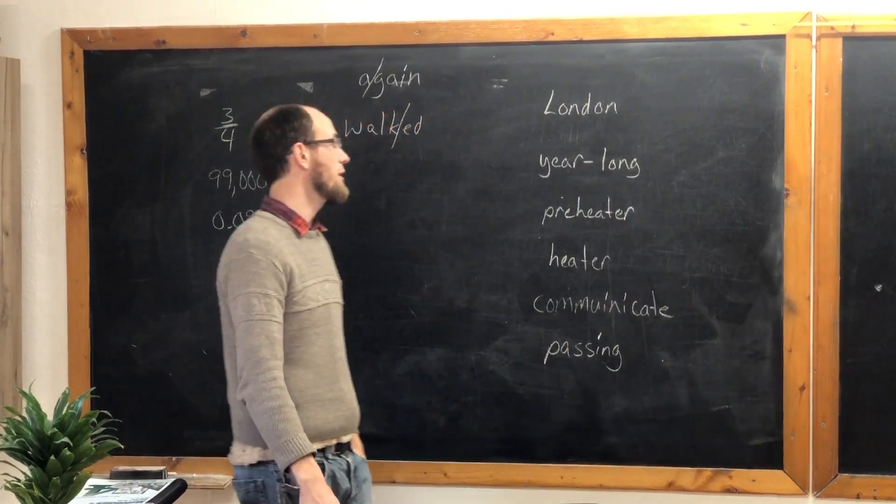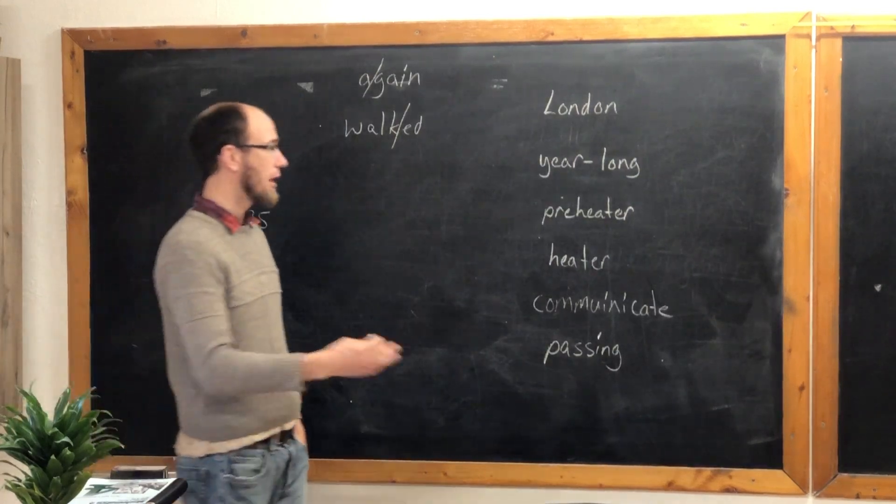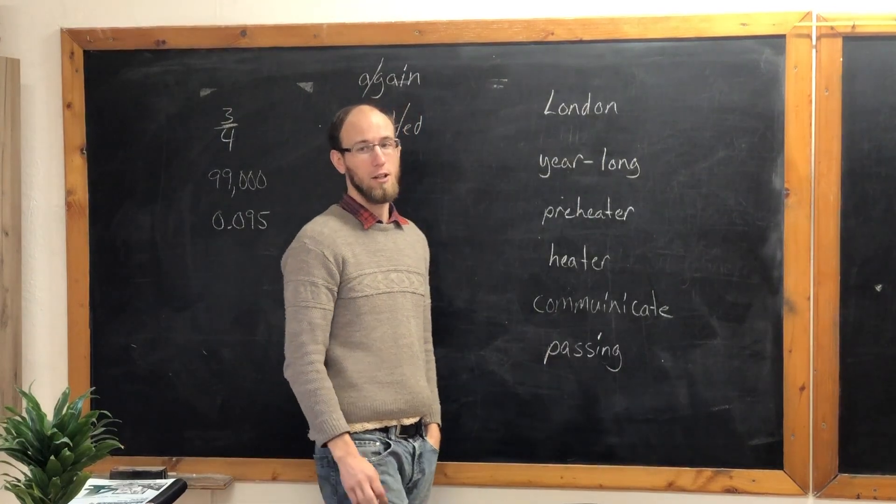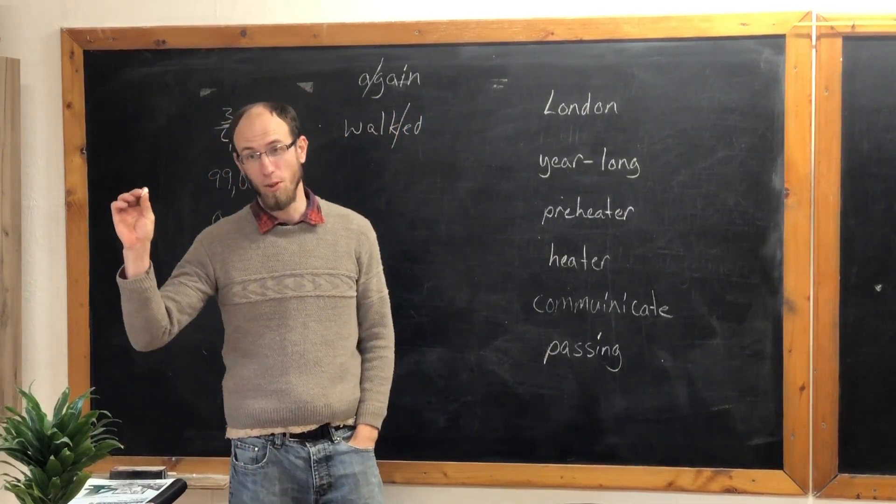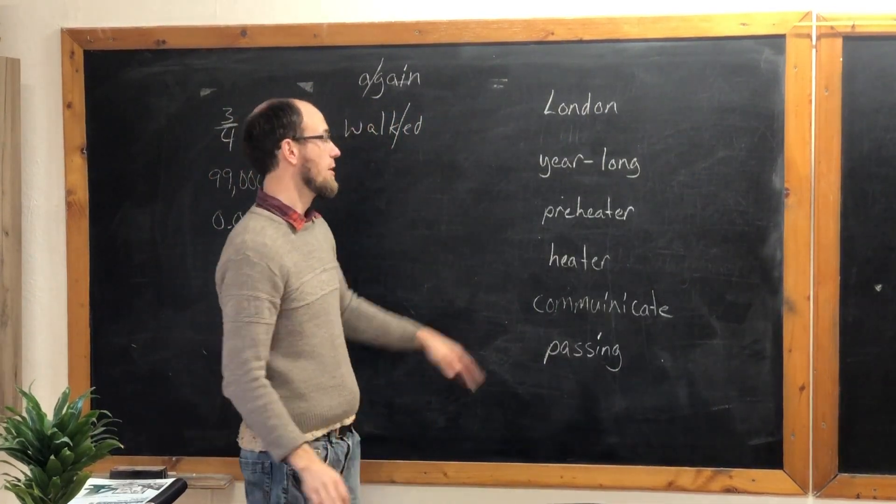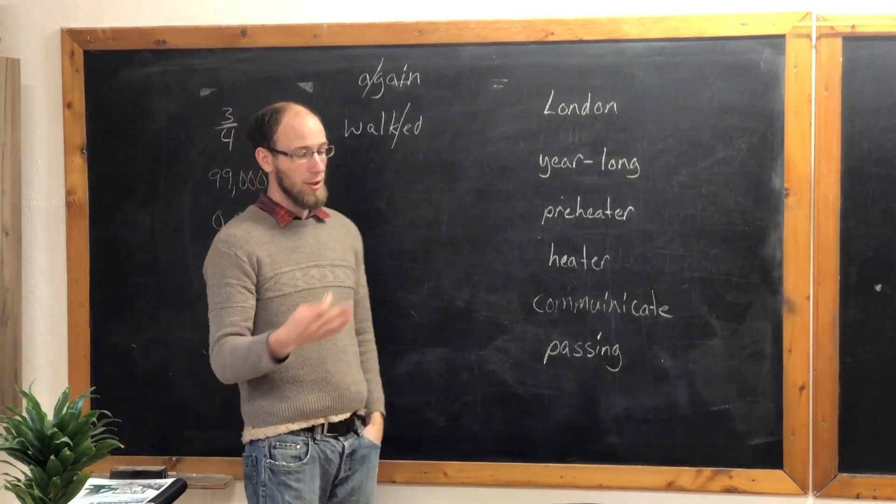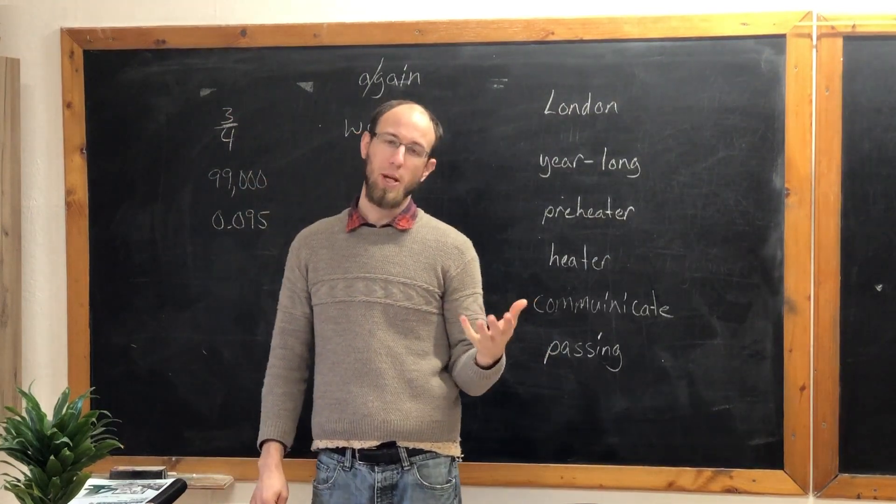Where should we divide year long? At the hyphen. If you have a hyphenated word, make sure you divide it at the hyphen. Don't try to divide it in another place. You're kind of like adding another hyphen in a word, and that isn't acceptable. So if there is a hyphen, divide it at the hyphens. Then, other than that, there's a few rules that are pretty basic.